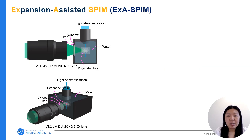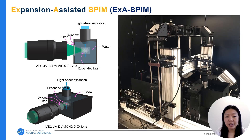This is the system layout. The illumination light is coming from the top and this large lens collects the signal from the side. Here is the picture of the portal lab located in our lab.